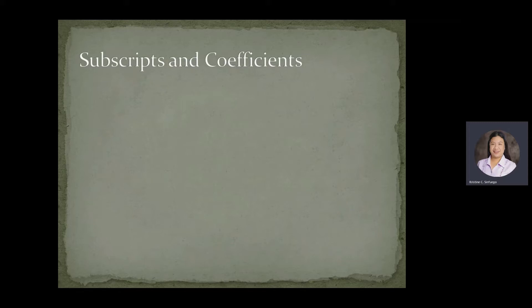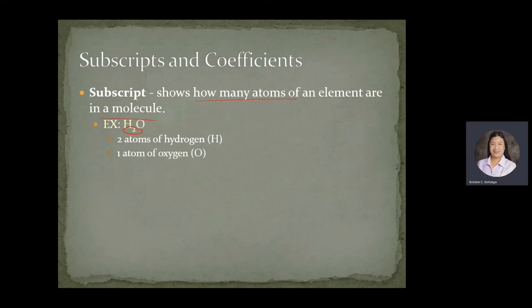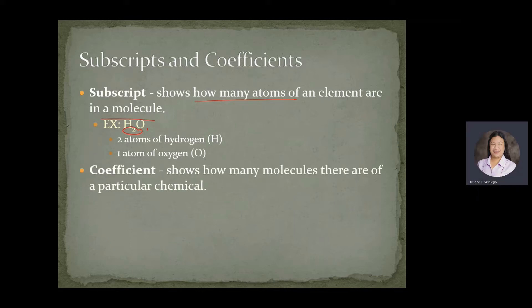So what are subscripts and coefficients? A subscript shows how many atoms of an element are in a molecule. For example, in H2O, we have two atoms of hydrogen and one atom of oxygen — these numbers are the subscripts showing the number of atoms of an element in a molecule.